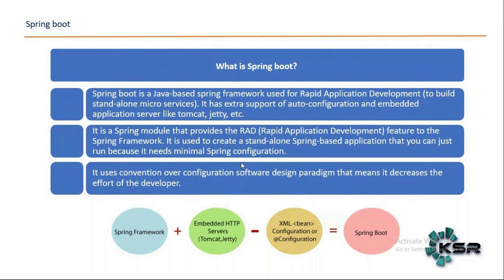Spring Boot has extra support for auto configuration. Earlier in Spring, you had to find the JAR and do the configuration manually. In Spring Boot, you add one JAR and the relevant JARs are added automatically. The application server like Tomcat and Jetty is already embedded within Spring Boot, so you don't need to install a server separately. These are the main benefits of Spring Boot — it is used for rapid application development.